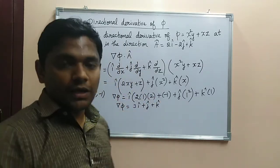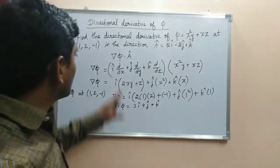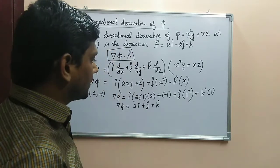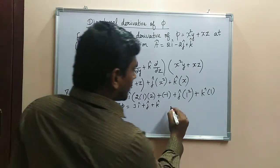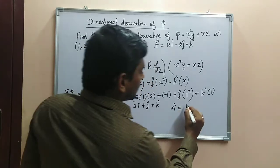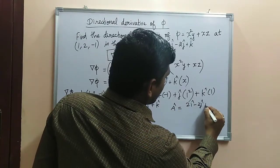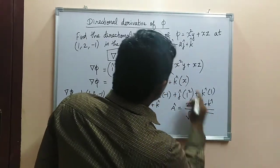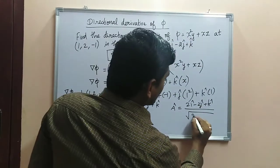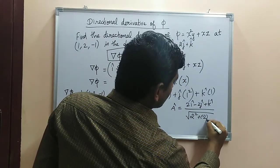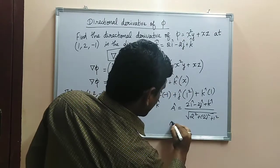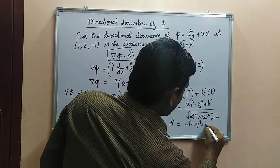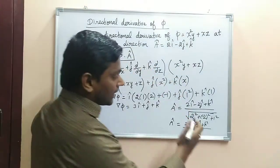This is the ∇Φ equation. So then you have to apply this formula: ∇Φ · Â. So actually we have to find out the unit vector like this: (2i - 2j + k) divided by modulus of A, that is square root of the sum of the squares. So Â = (2i - 2j + k) divided by 3.